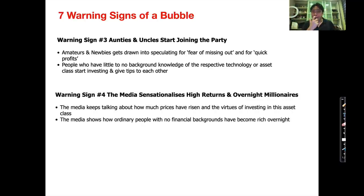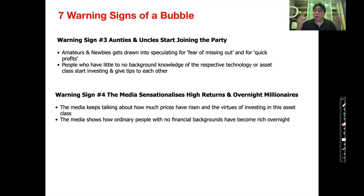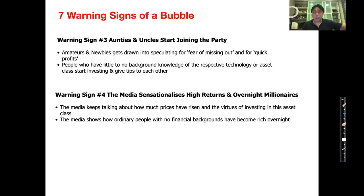Warning sign number four is also related to warning sign number three. Amateurs join the party because of the media. The media will tend to sensationalize very high returns and how ordinary people have become overnight millionaires. That's when people started to buy dot-com stocks, when they talked about dot-com millionaires. That's when people entered the housing market after seeing how many people became rich in housing, and that's how that bubble formed.